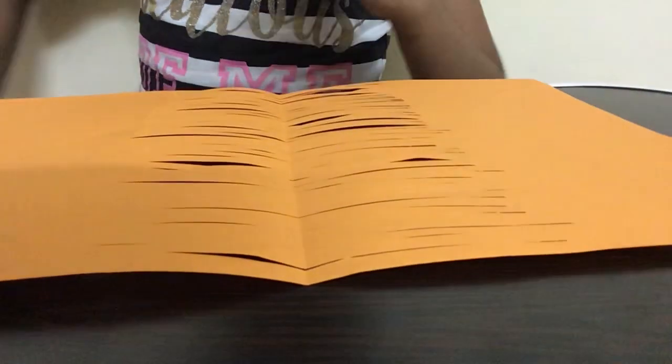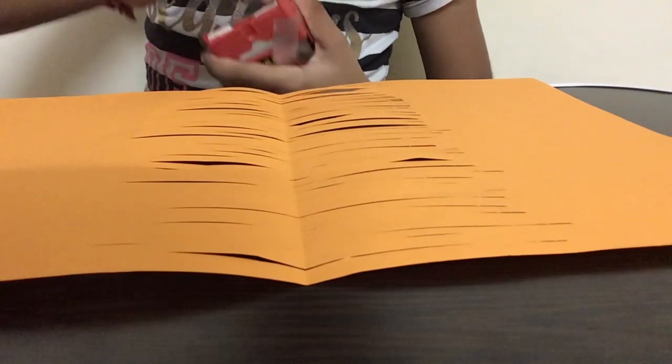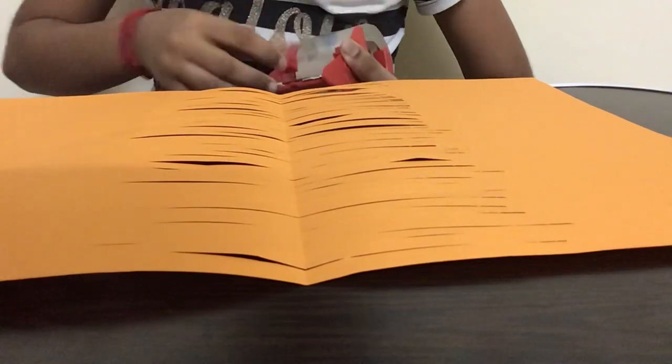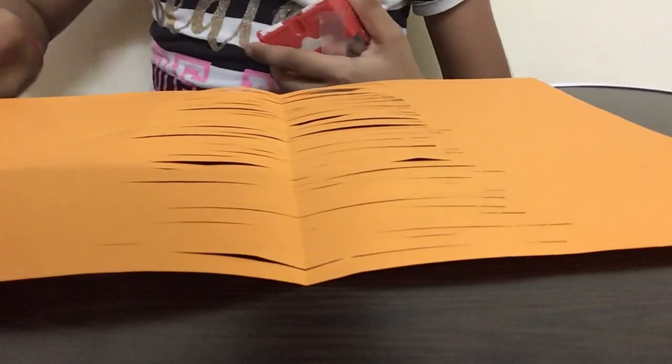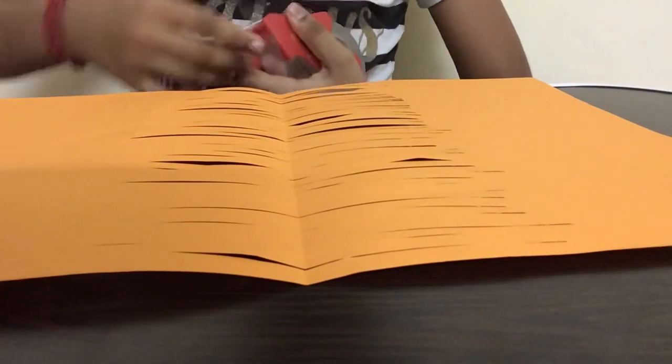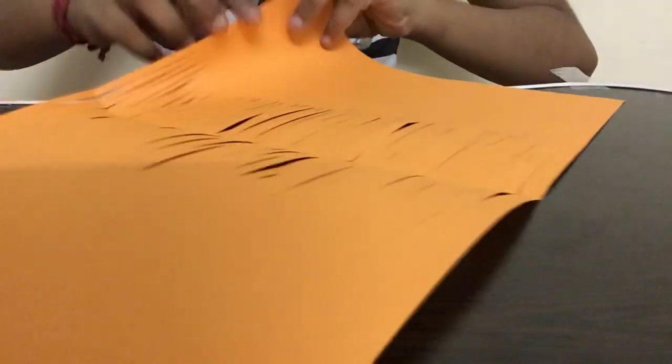Yeah, now we have finished cutting it. So now we have to open the paper and now we have to take a piece of cello tape—and I'm taking one more piece as well. So now we have to roll this on the side.